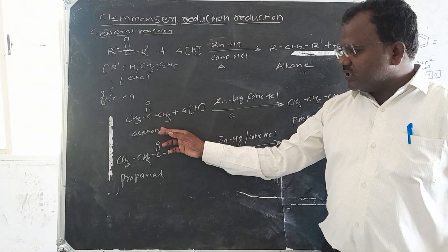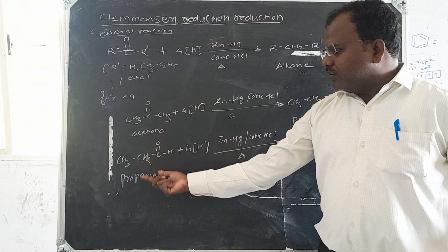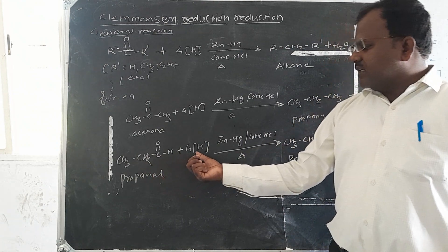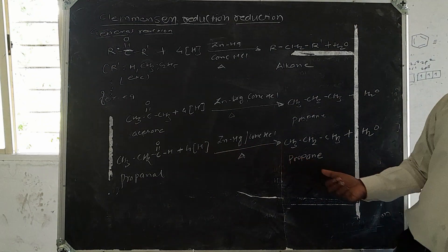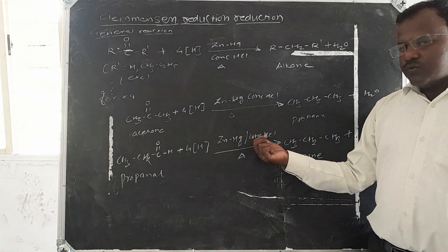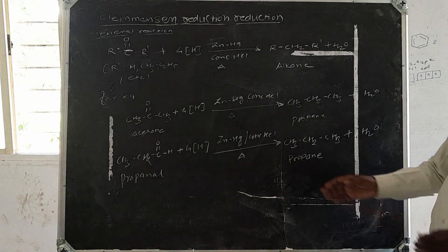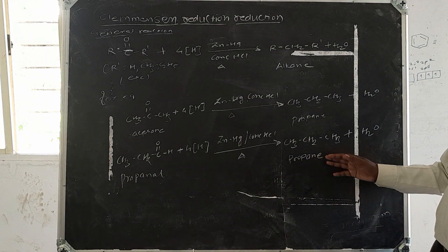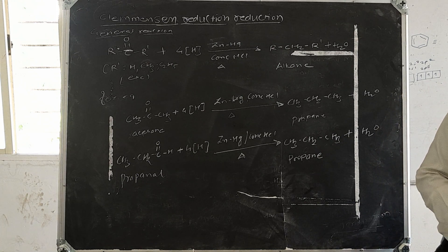Another example: this is the ketone group, this is the aldehyde group. Propanal is reduced with hydrogen in the presence of zinc amalgam and heat. Then the formation of hydrocarbon, that is propane, forms along with water.